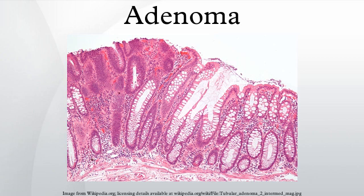An adenoma is a benign tumor of epithelial tissue with glandular origin, glandular characteristics, or both. Adenomas can grow from many glandular organs, including the adrenal glands, pituitary gland, thyroid, prostate, and others.